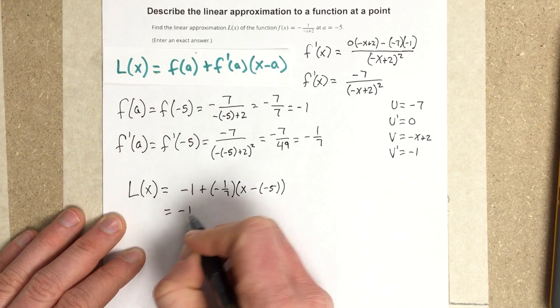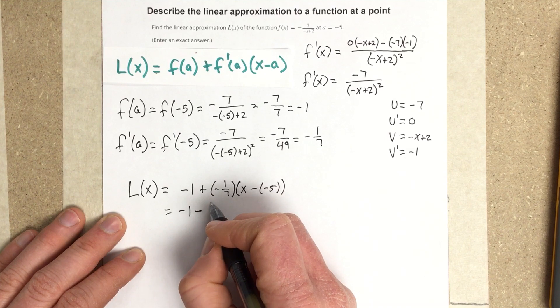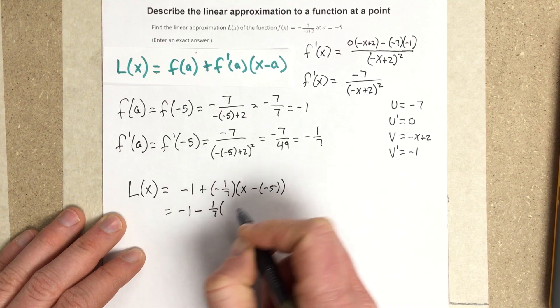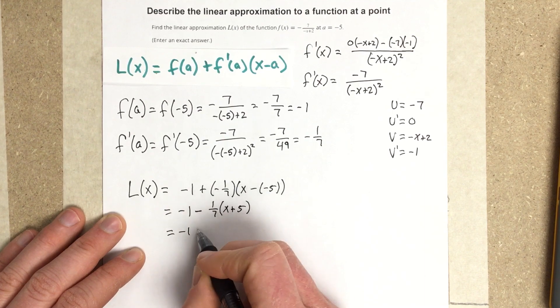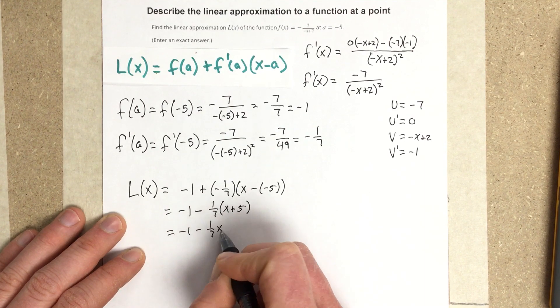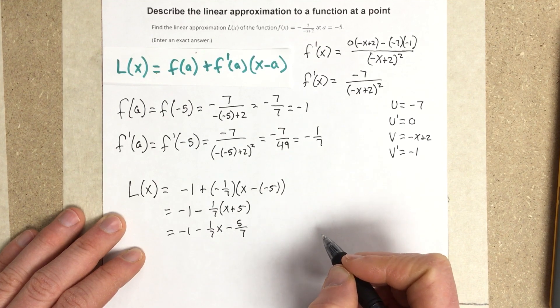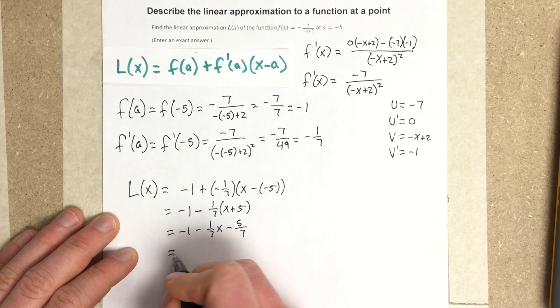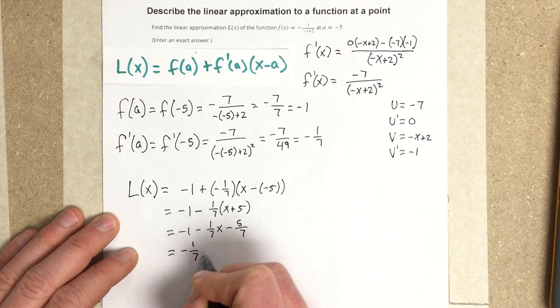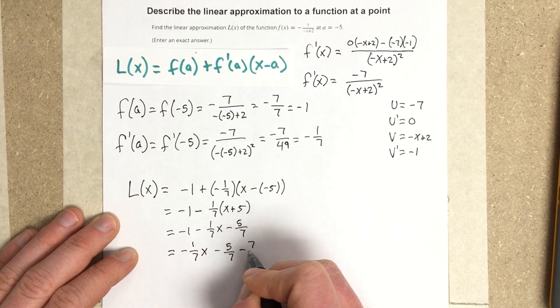I get negative 1 minus 1 seventh. This will be X plus 5. Let's distribute. I get negative 1 minus 1 seventh X minus 5 sevenths. If I take negative 1 and combine it with negative 5 sevenths, I end up with negative 1 seventh X minus 5 over 7 minus 7 over 7.